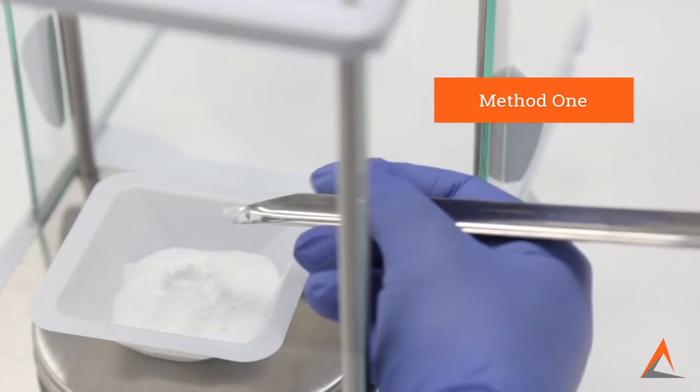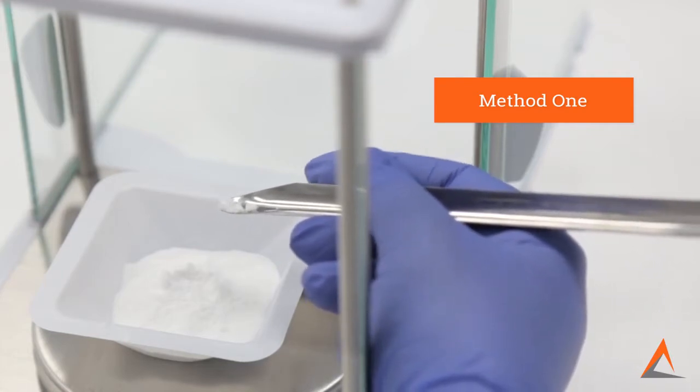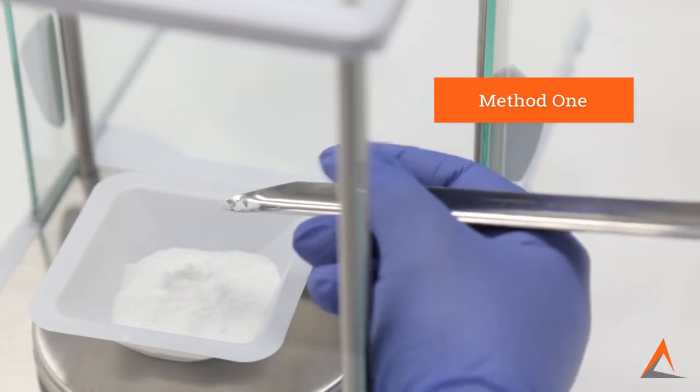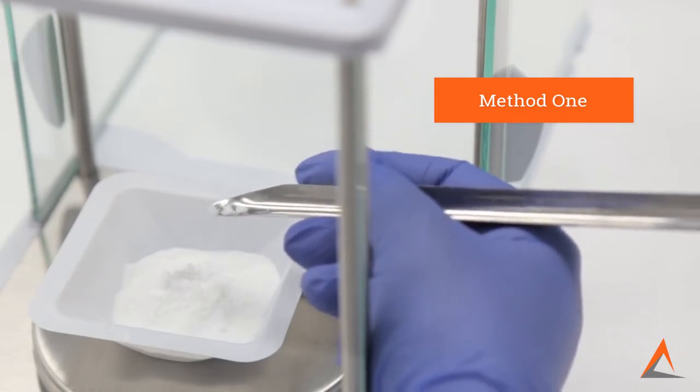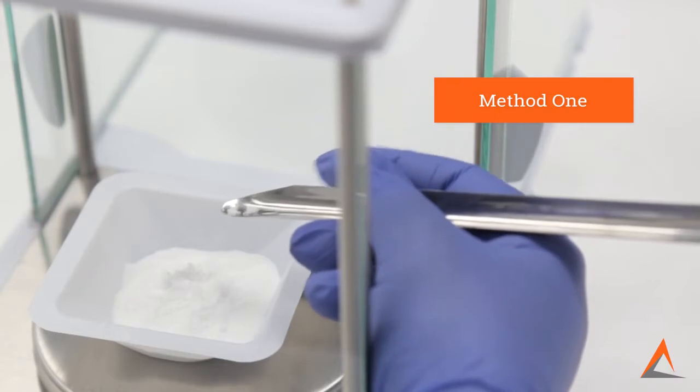Now when you lightly tap your index finger against the spatula, there's less movement and in turn more control of the spatula. This will allow a smaller amount of powder to fall into your weighing container.